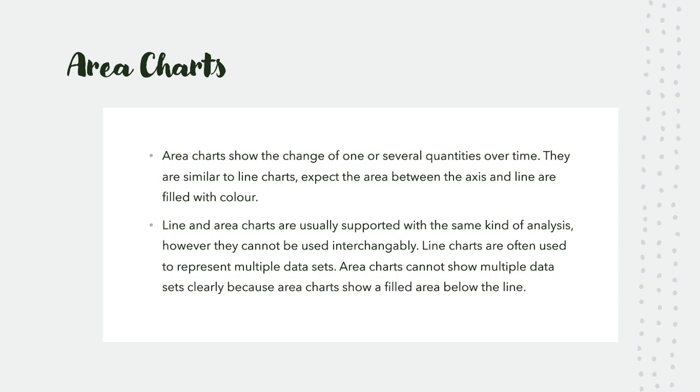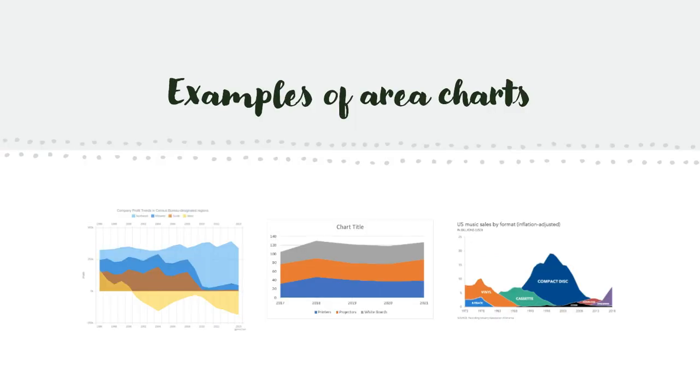Area charts show the change of one or several quantities over time. They are similar to line charts except the area between the axis and line are filled with color. Line and area charts are usually supported with the same kind of analysis, however they cannot be used interchangeably. Line charts are often used to represent multiple data sets. Area charts cannot show multiple data sets clearly because the area charts are filled with color.